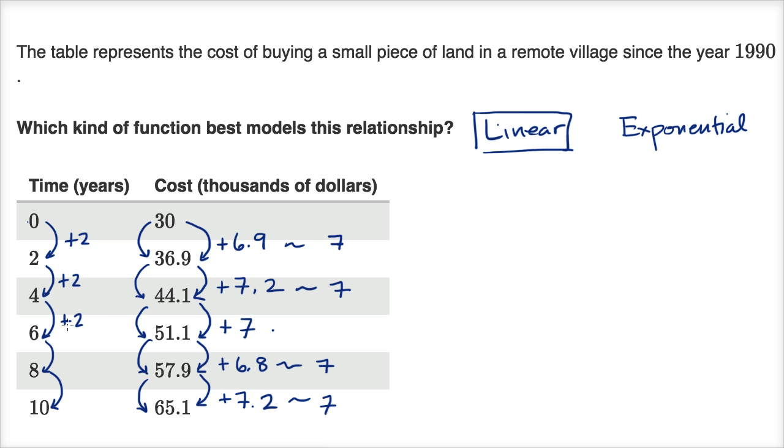If I see every time I increase by two years, I'm increasing cost by 6.9 or 7.2 or seven, it's pretty close to seven. So it's not exactly the cost, but the model predicts it pretty well. If you were to plot these on a coordinate plane and try to connect the dots, it would look pretty close to a line, or you could draw a line that gets pretty close to those dots.